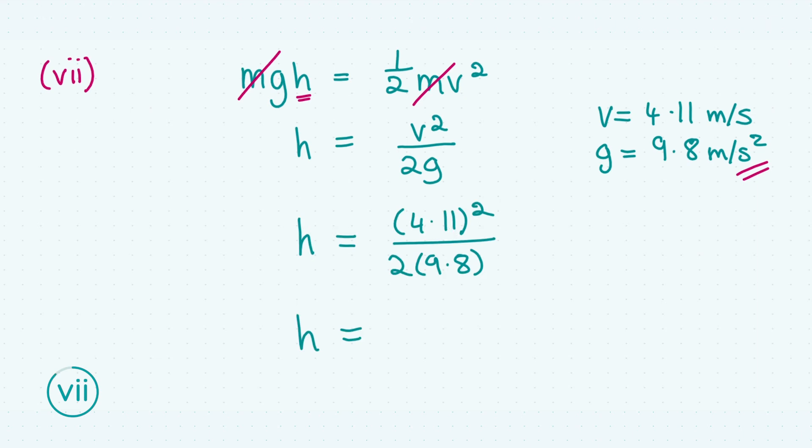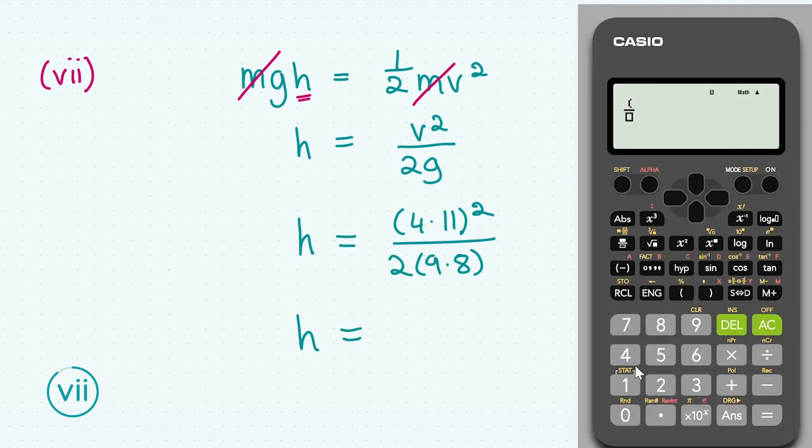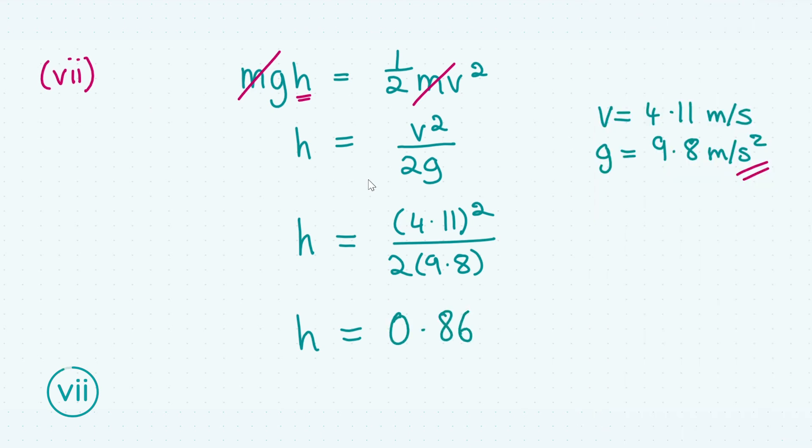Now all we have to do is substitute in our values and get the maximum height. Let's take out our calculator and substitute in. Since we have powers here, it is best to use brackets. We have our answer for h, 0.86 meters, rounded to two decimal places, not forgetting our units. Our final answer will get you three marks.